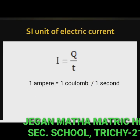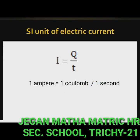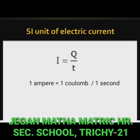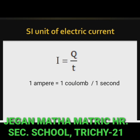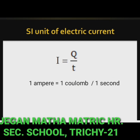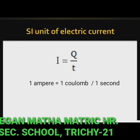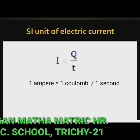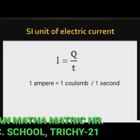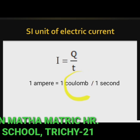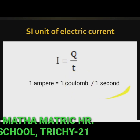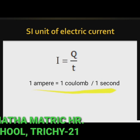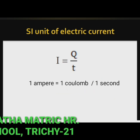The SI unit of electric current is Ampere, represented by the symbol capital A. The current flowing through a conductor is said to be 1 Ampere when a charge of 1 Coulomb flows across any cross-section of a conductor in 1 second. Hence, 1 Ampere = 1 Coulomb / 1 second.